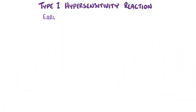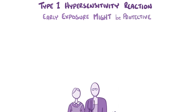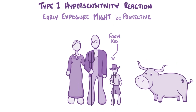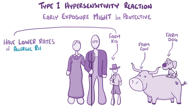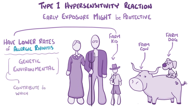Interestingly, there's evidence that early exposure to allergens might protect against type 1 hypersensitivity. For example, children who grow up on farms and have pets at an early age typically have lower rates of allergic rhinitis. It's thought that a combination of genetic factors and environmental factors like these contribute to which type of T cell group is most common, and thereby influences the overall immune response.